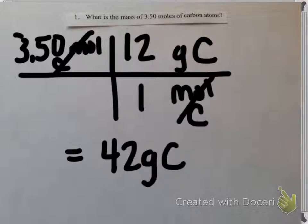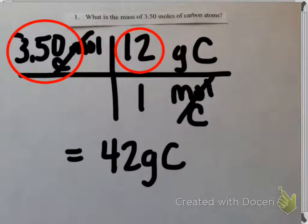When I look at my significant figures, 3.50 has 3 sig figs and 12 has 2 sig figs. I'm going to ignore the 1 — it's called an exact number when it's next to mole, so I only look at the other numbers: the grams and the given. Since I have 2 sig figs, I need 2 sig figs in my answer, which I already have.